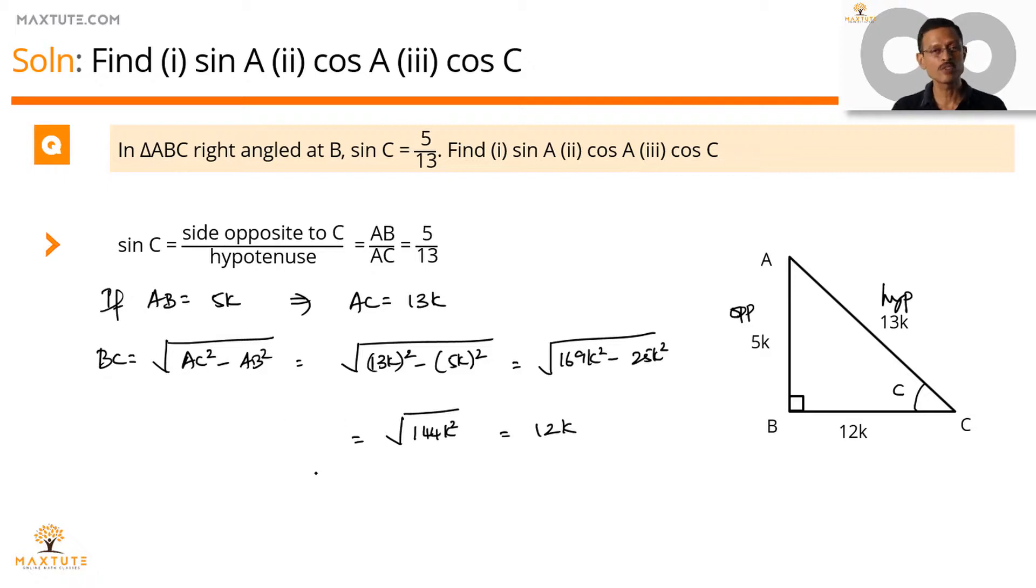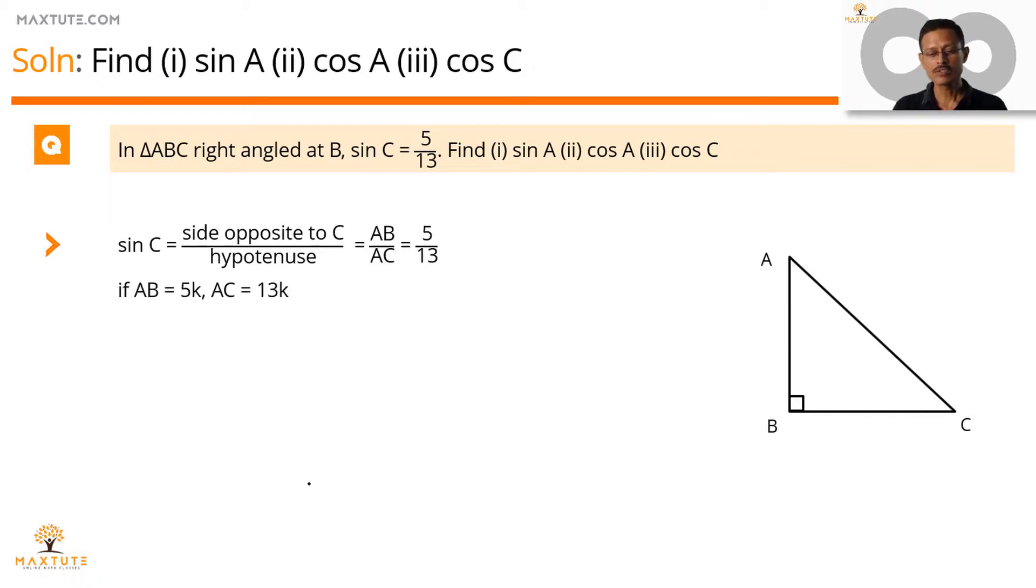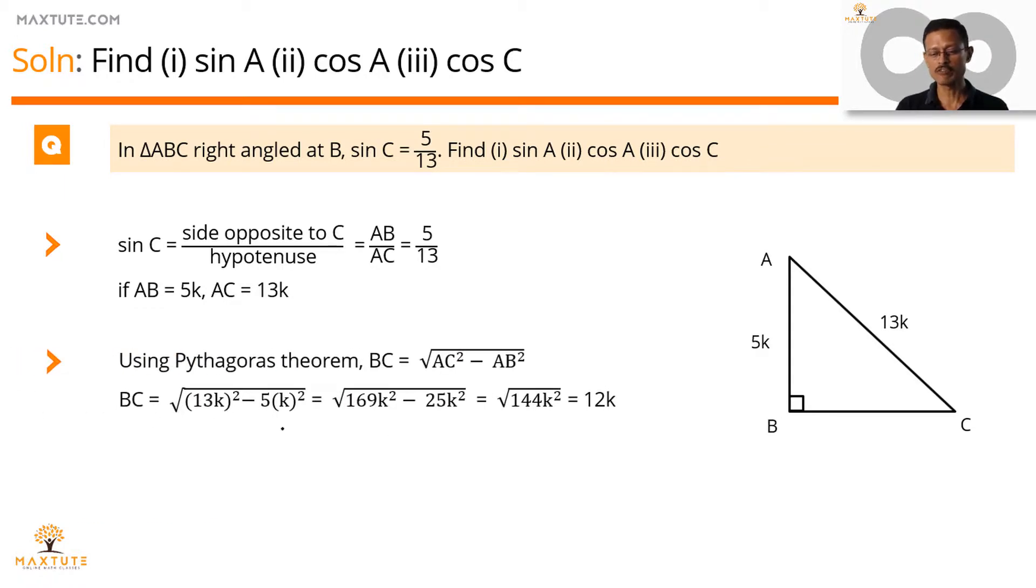Let's quickly summarize up to this point in a printed form. So we know that if AB by AC equals 5 by 13 then if I assign AB to be equal to 5k AC will be equal to 13k. Apply Pythagoras theorem. Find the value of BC which is equal to 12k. We found out all three sides.